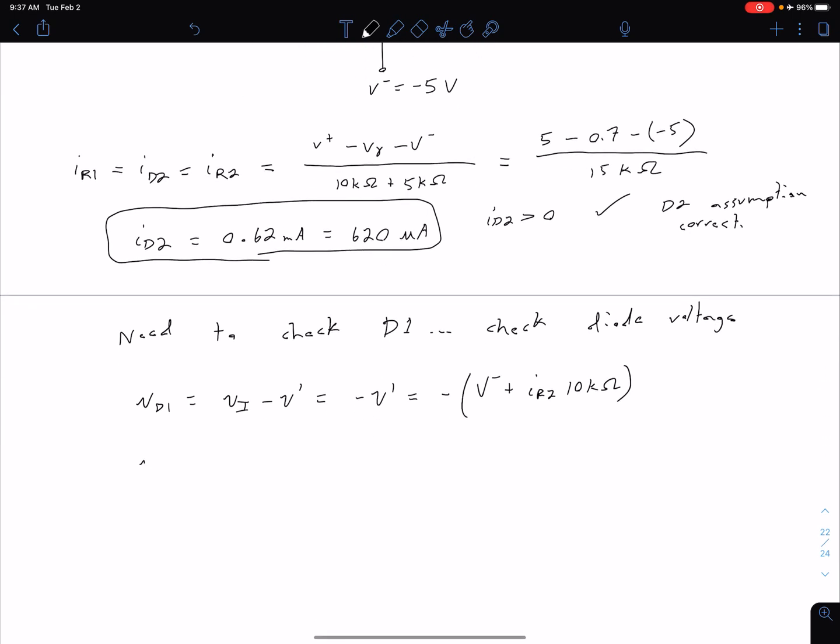So plugging in values we get that V_D1 is equal to negative negative 5 plus our 0.62 milliamps times our 10k ohm. Now in this case our k for our k ohms and our m for our milliamps are going to cancel each other out,